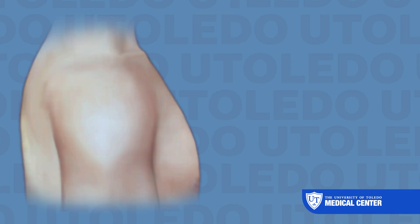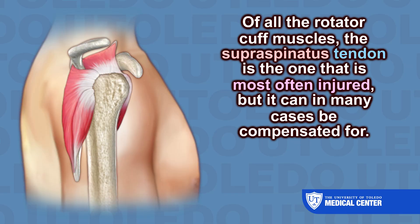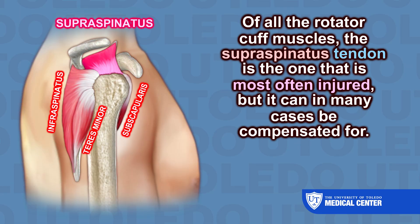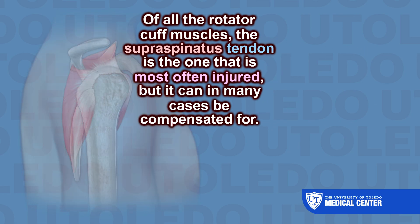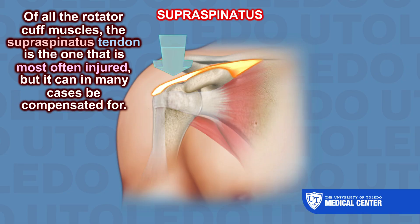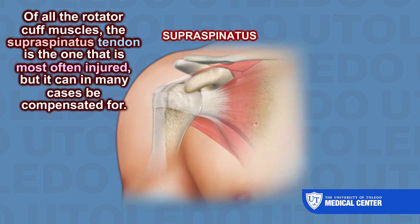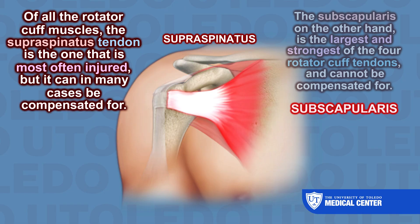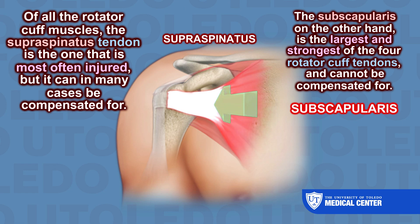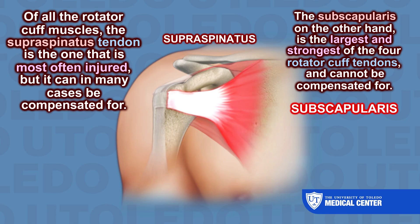Of all the rotator cuff muscles, the supraspinatus tendon is the one that is most often injured, but it can in most cases be compensated for. The subscapularis, on the other hand, is the largest and strongest of the four rotator cuff tendons, and it cannot be compensated for.